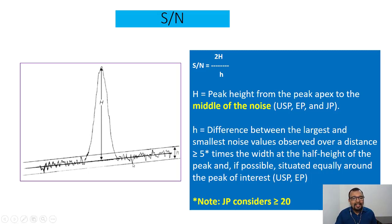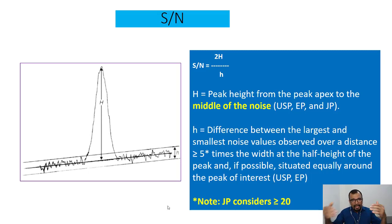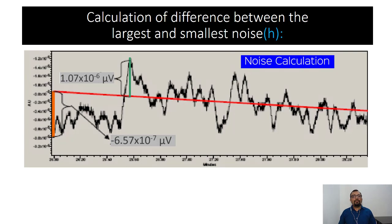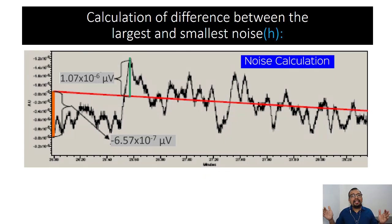If you look at the cursor, this tip or observation is the smallest noise value. The difference between these two values gives you the small h. I am going to explain this with the help of an actual example so you can completely relate and understand the concept clearly. The calculation of the difference between the largest and the smallest noise: let us assume you have had a blank injection, or you are using a standard injection, and you have selected the appropriate chromatographic area — the start point and end point — for the calculation of signal to noise.